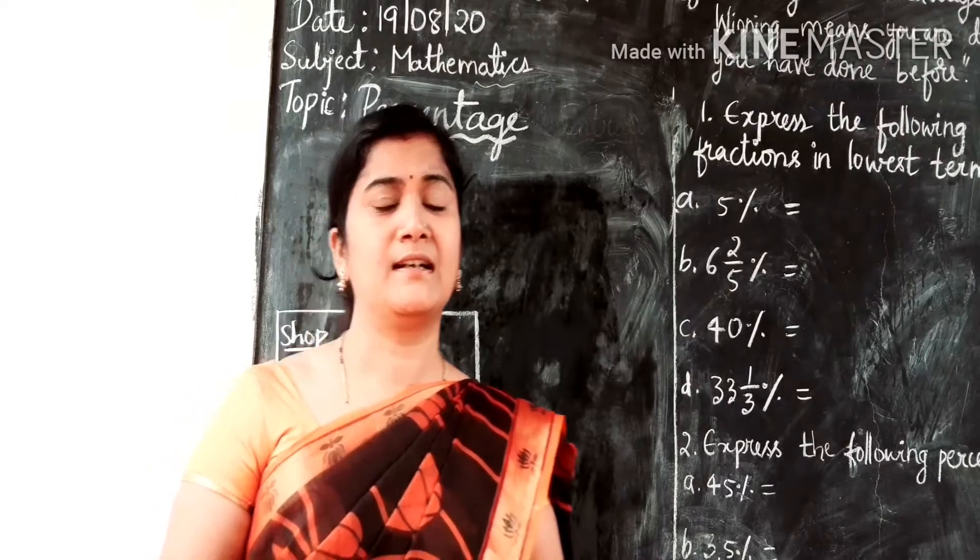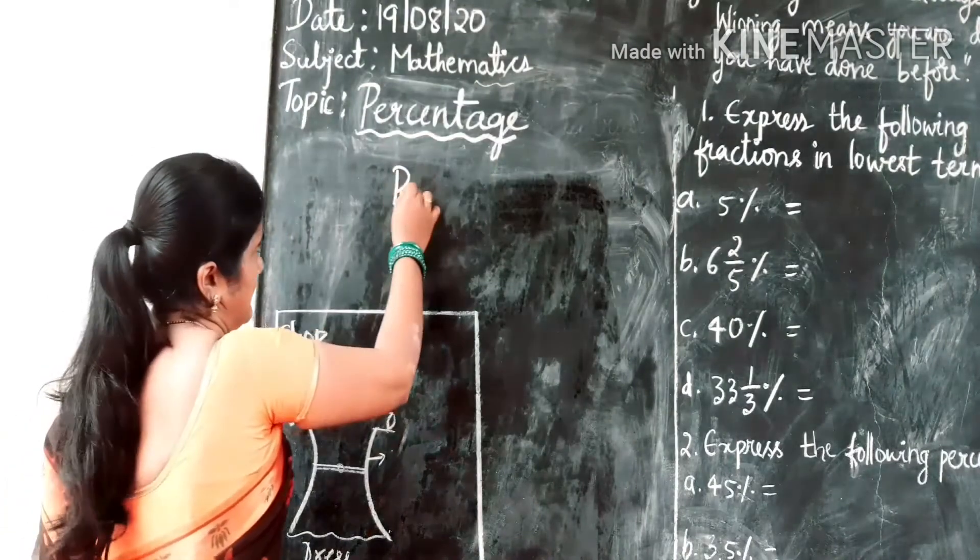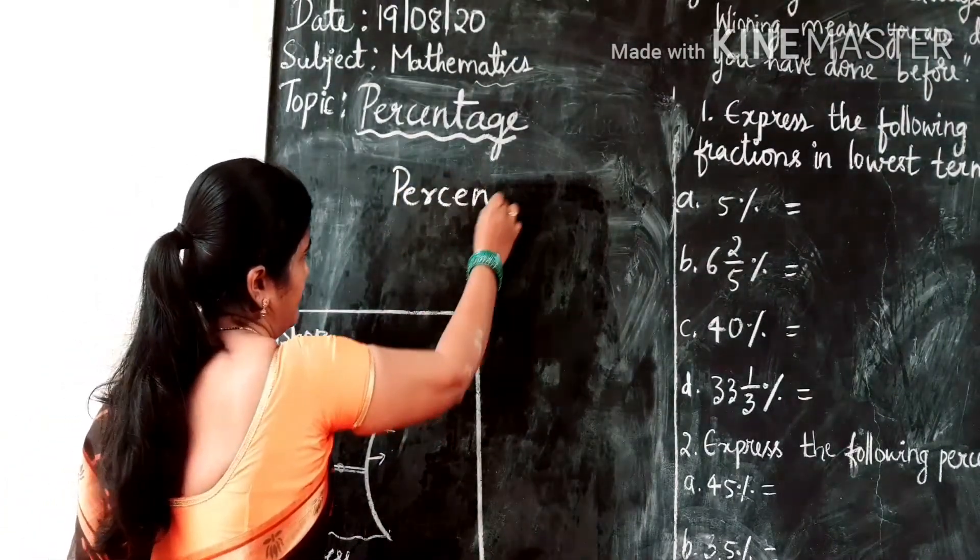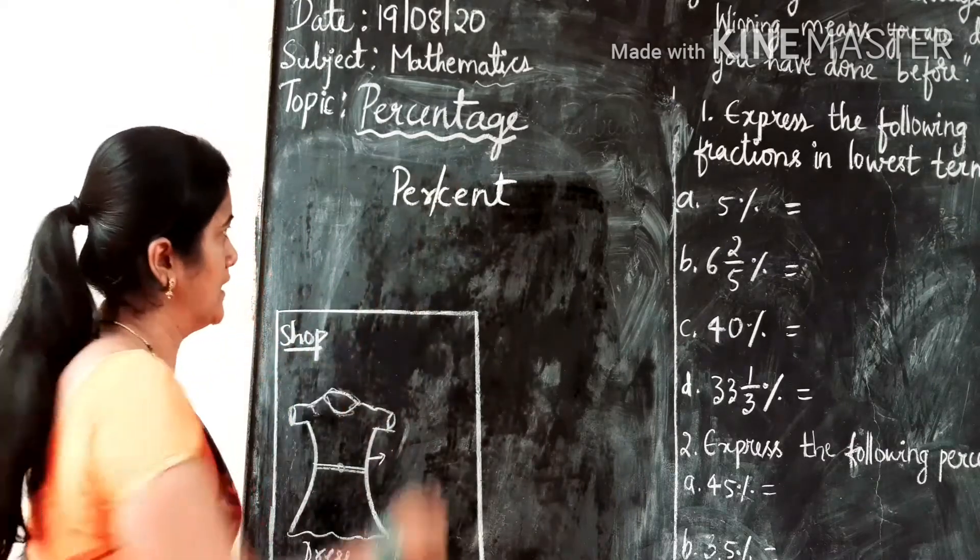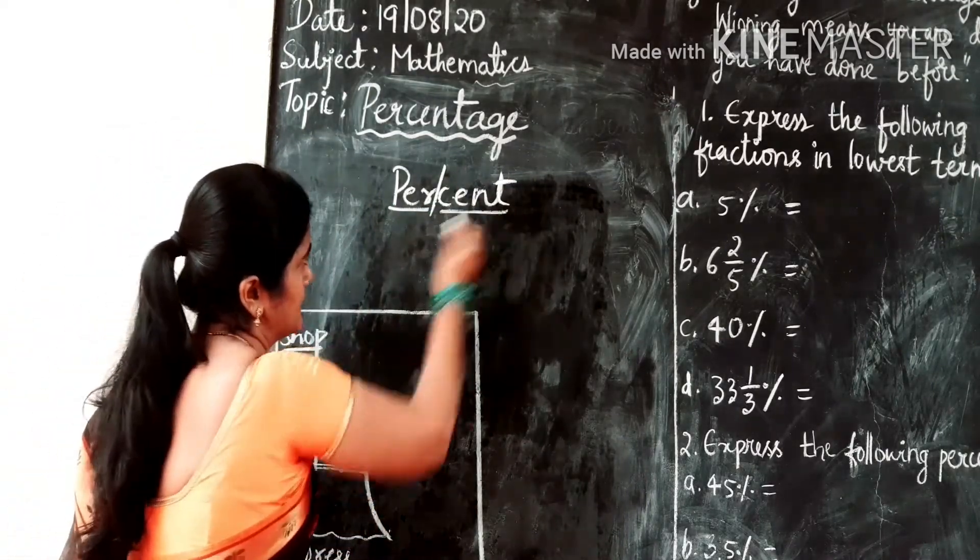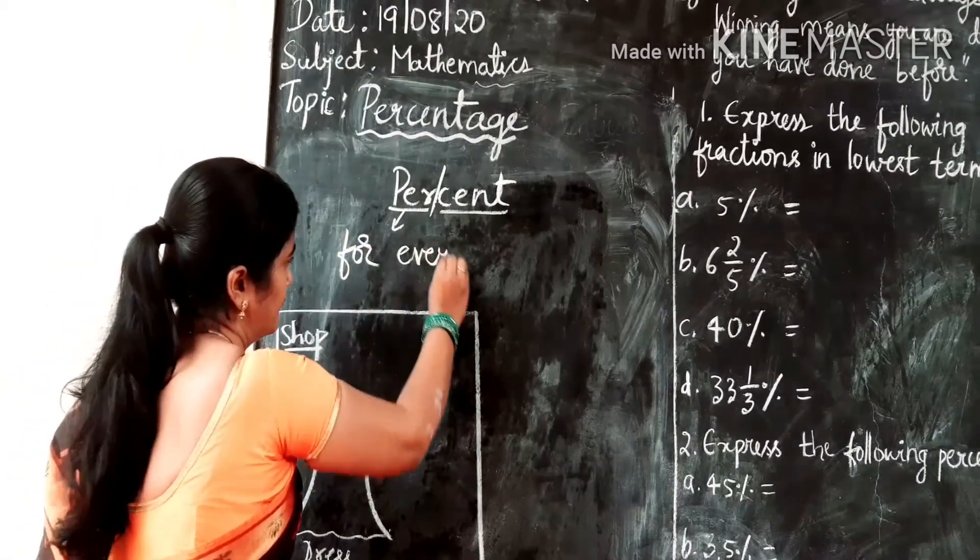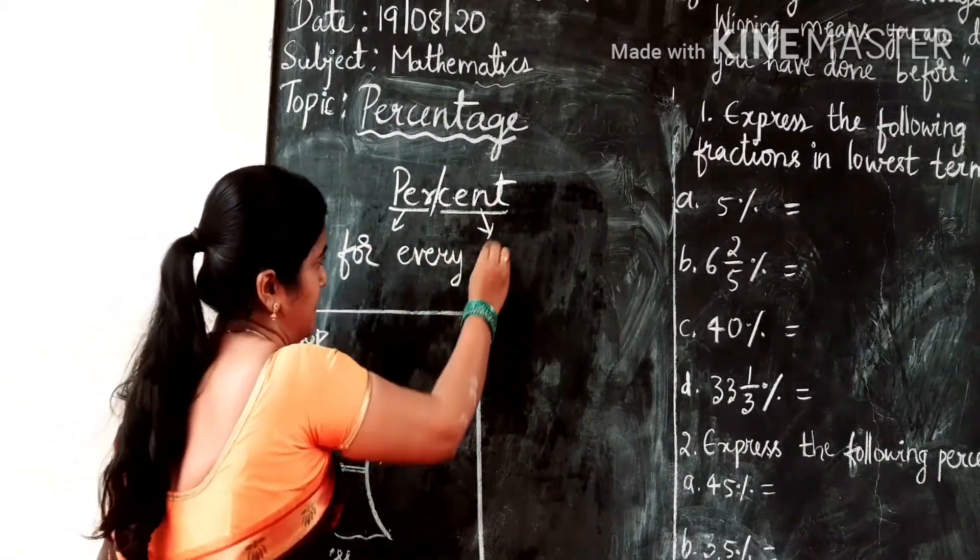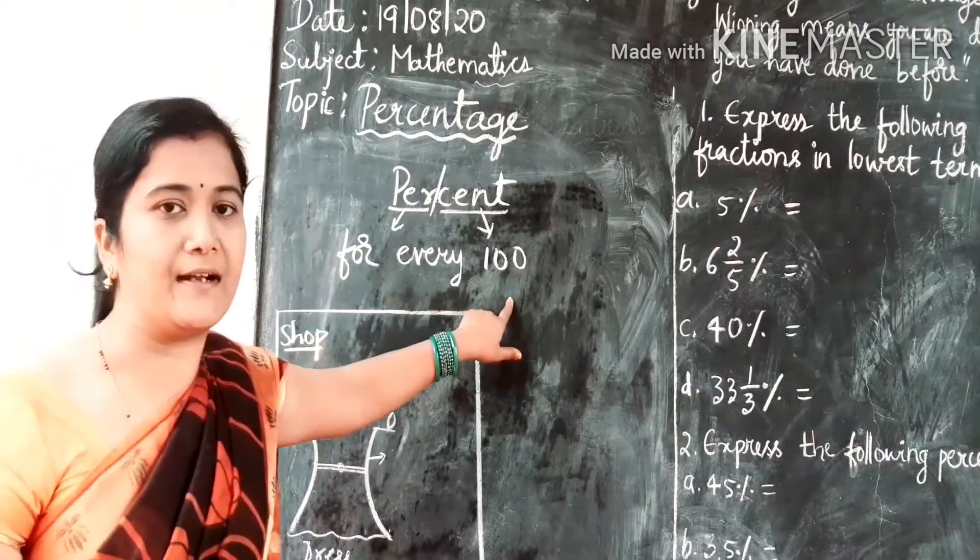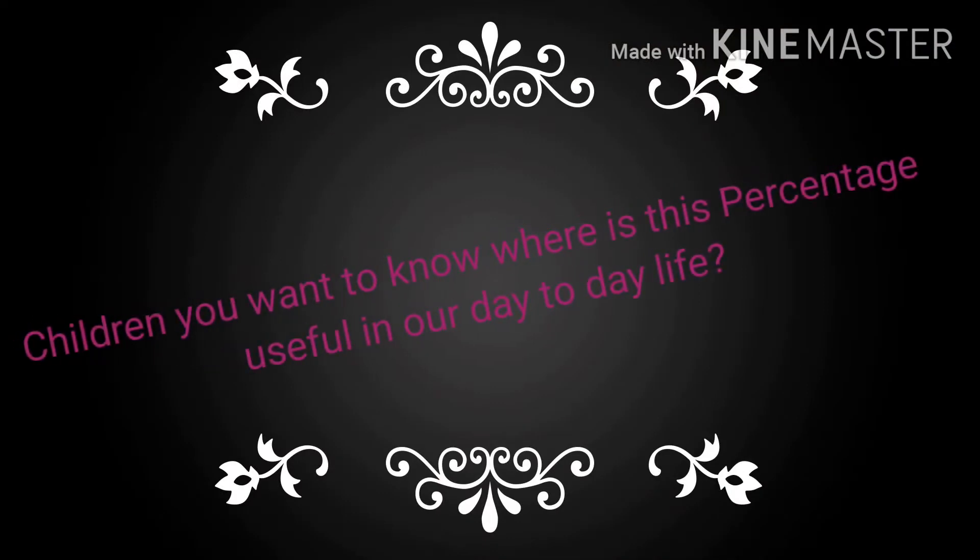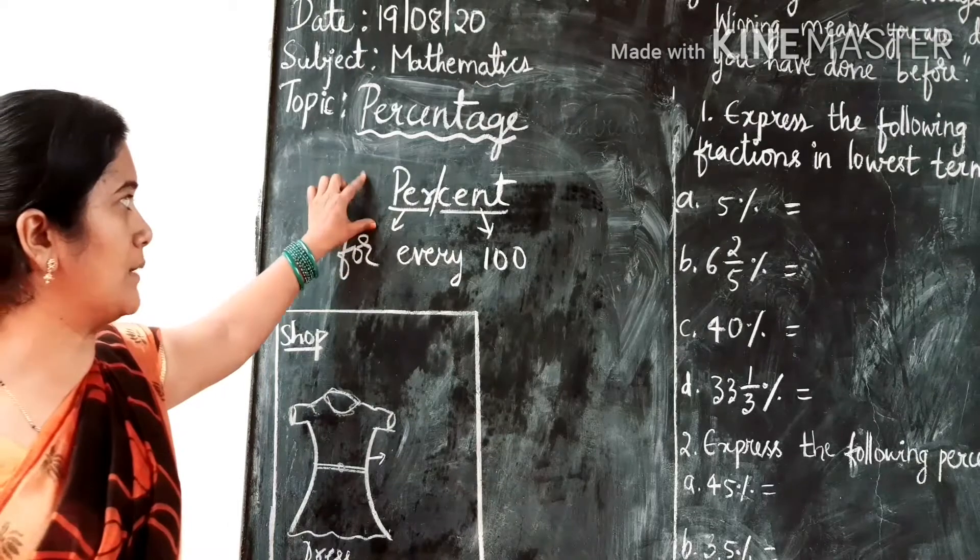Children, let us know something more about percent. The word percent can be written as two words, that is per and cent. In English, per means for and cent means 100. So we are going to calculate the value for every 100.